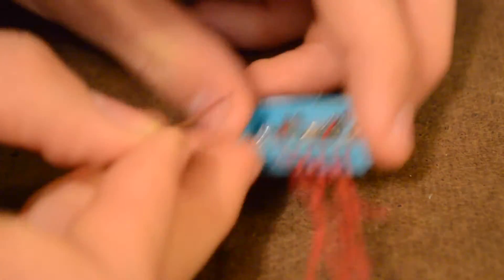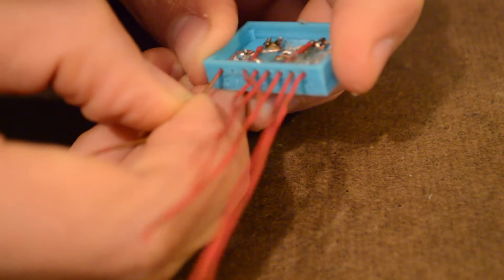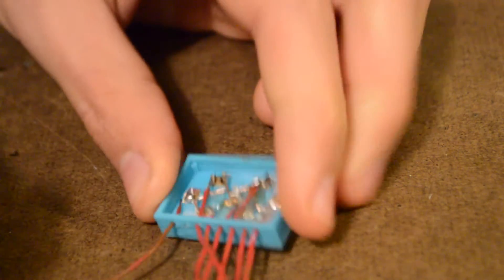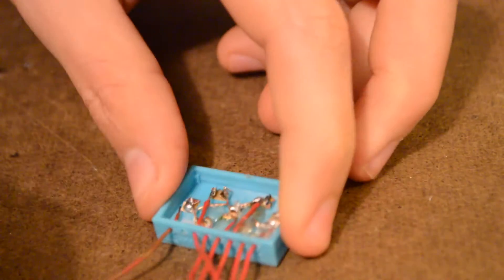Solder a ground wire to the copper wire we stripped and glued in before and then solder the final wire. Make sure to do the final wire afterwards so as to leave room for the ground.